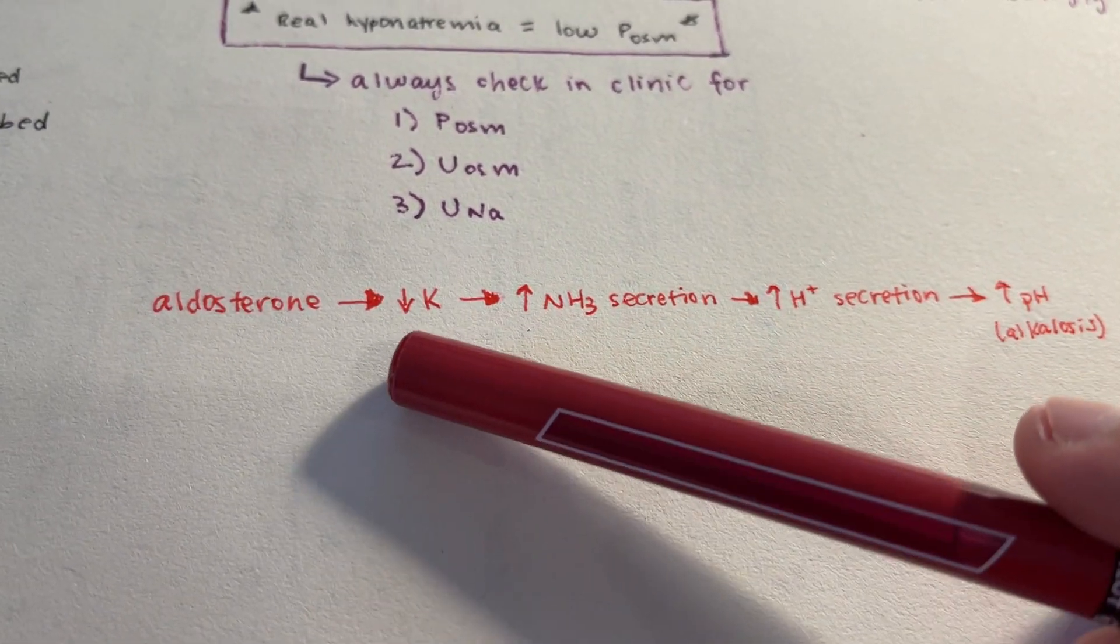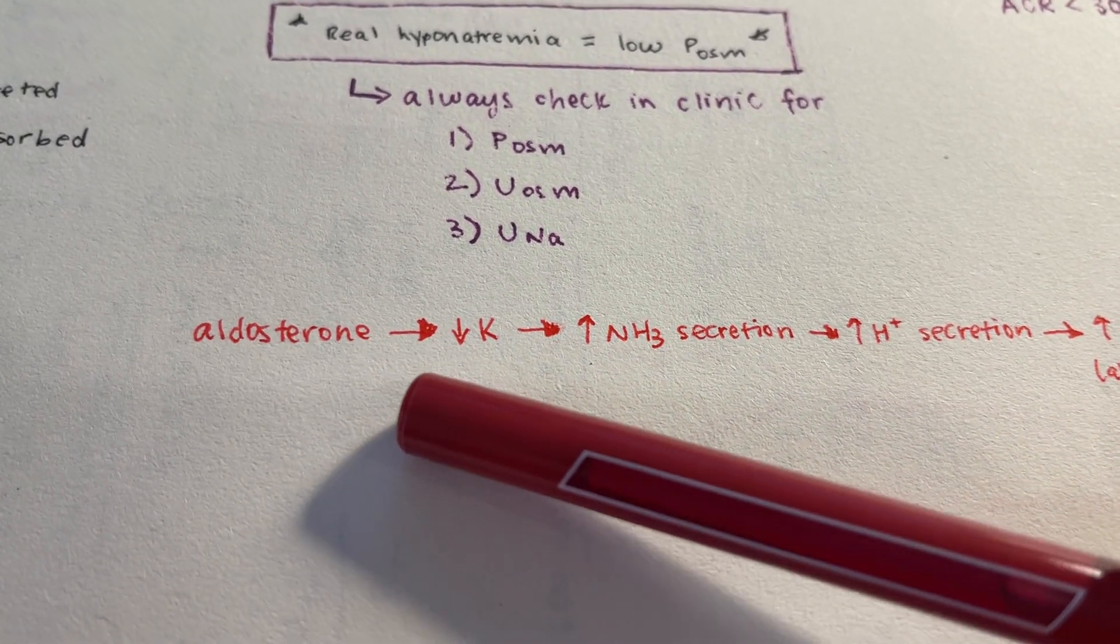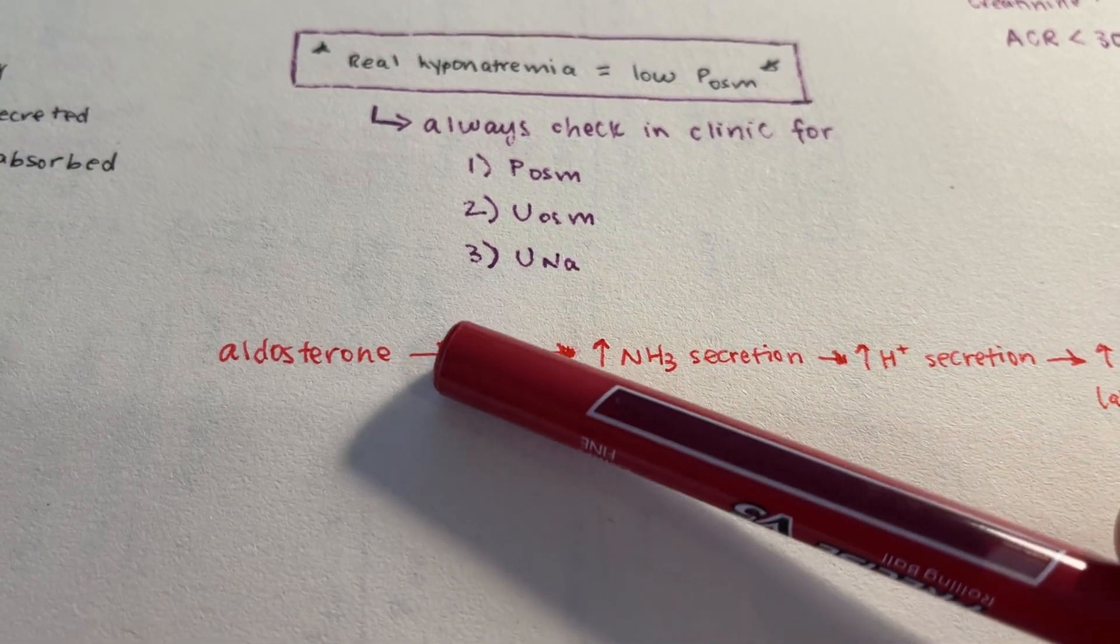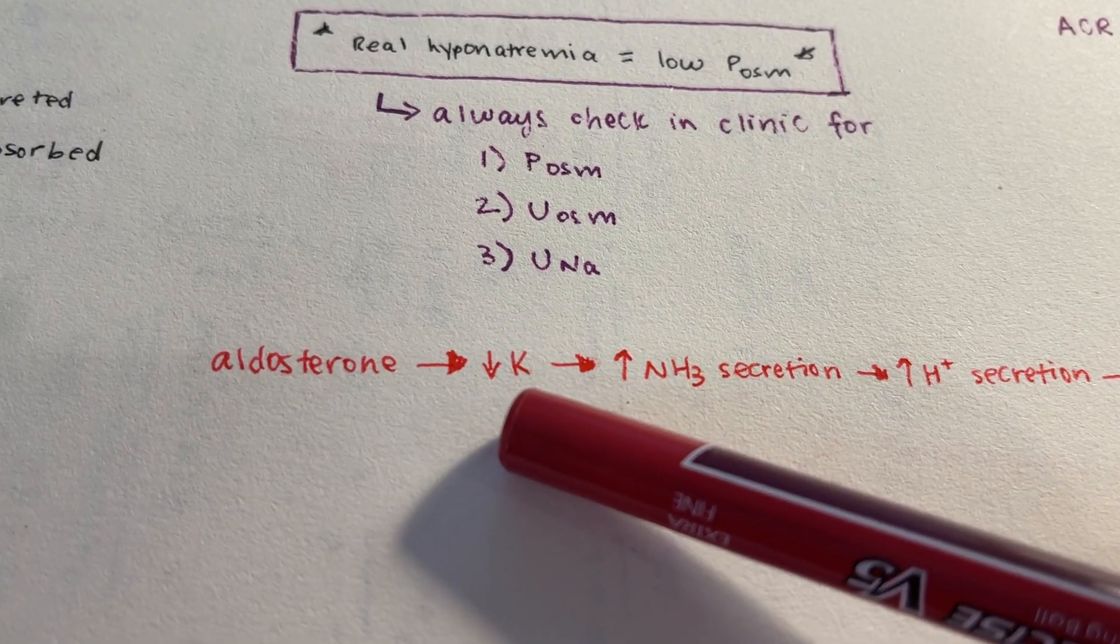So if you have a lot of aldosterone production, that means you're going to secrete a lot of potassium in your urine, which means that you're going to be hypokalemic. So you're going to have a decrease in potassium in your body, or hypokalemia.